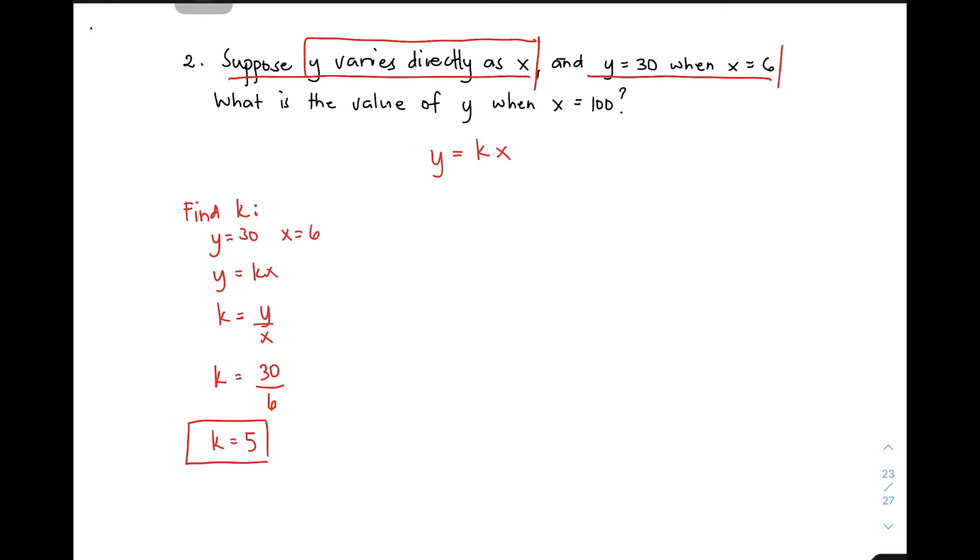Since we have the constant of variation which is 5, we can create an equation. The equation is Y is equal to 5X. Now we deal with the main problem: What is the value of Y when X is equal to 100?